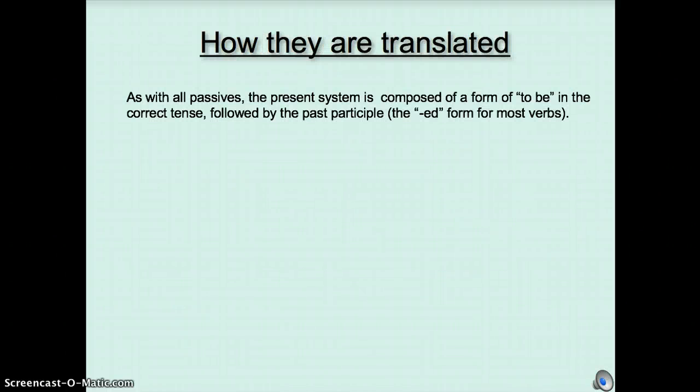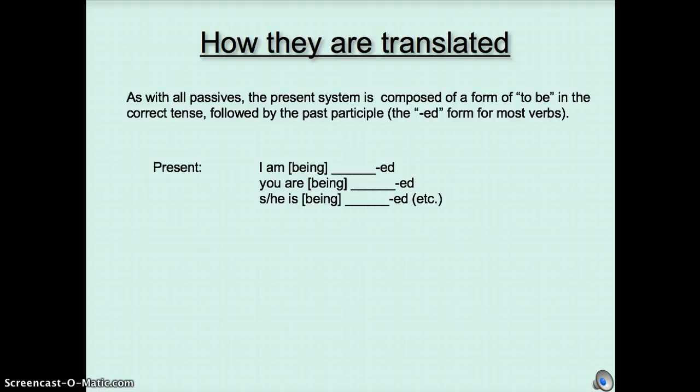As with all passives, the present system is composed of a form of to be. So, you have some kind of to be after your subject in the correct tense and it ends with the past participle, which is usually the ed form for most verbs. So, in the present tense, this is going to look like, I am heard, for example, or I am being heard. You are being heard, or she or he is being heard, et cetera. Remember, note that you don't really need the being, but you can have it. I am heard, I am being heard. Same thing according to the Romans.